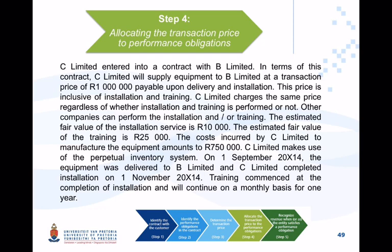The 1 million Rand price is inclusive of installation and training. C Limited charges the same price regardless of whether installation and training is performed, giving an idea that this 1 million Rand is the standalone selling price for the equipment. Other companies can perform the installation and/or training. The estimated fair value of installation services is 10,000 Rand and the estimated fair value of training is 25,000 Rand.